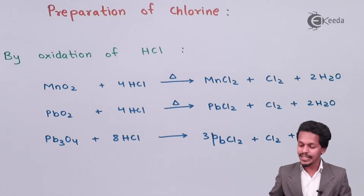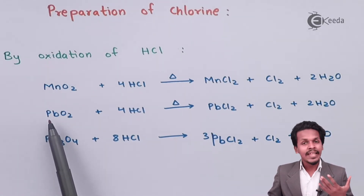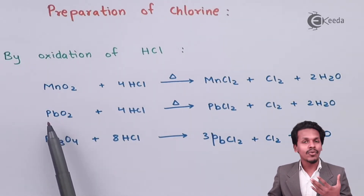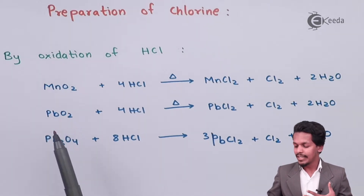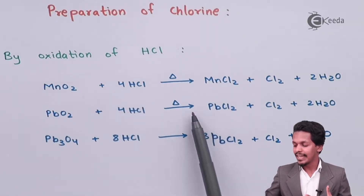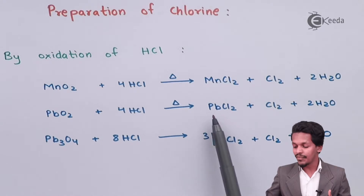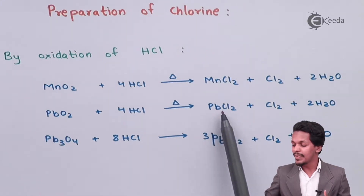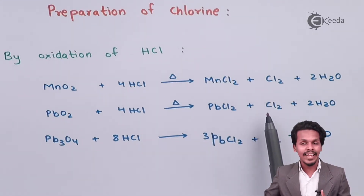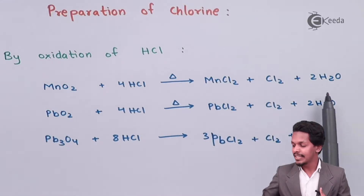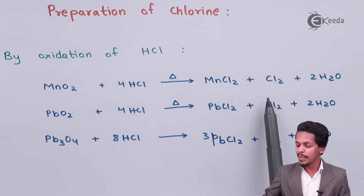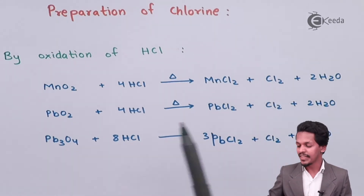The next oxidizing agent is PbO2. Whenever lead oxide is treated with 4 moles of HCl, it converts into PbCl2, along with liberation of Cl2 and 2 moles of H2O as a byproduct. So again, this is a method where we can obtain Cl2.